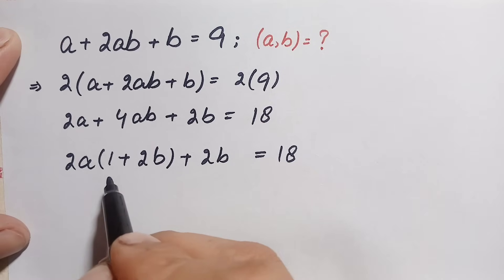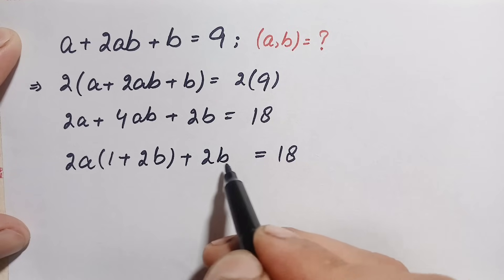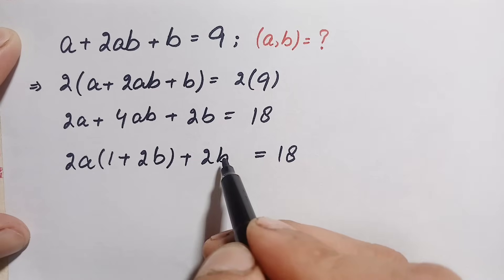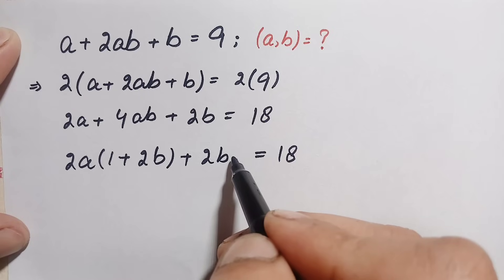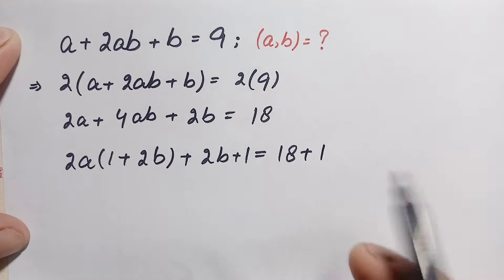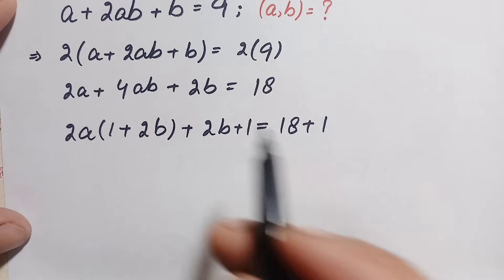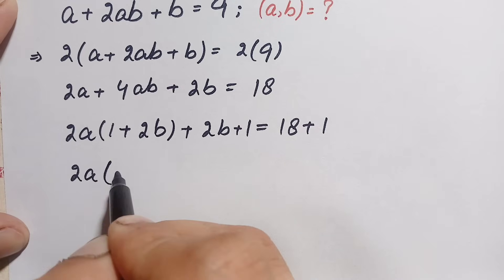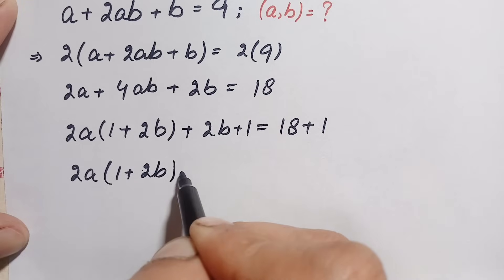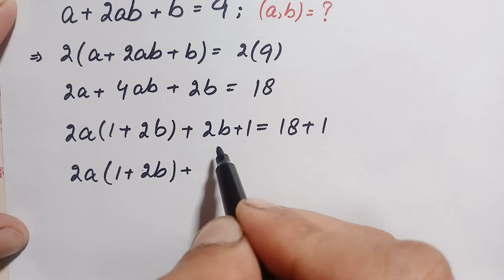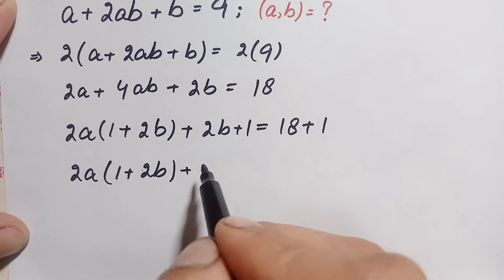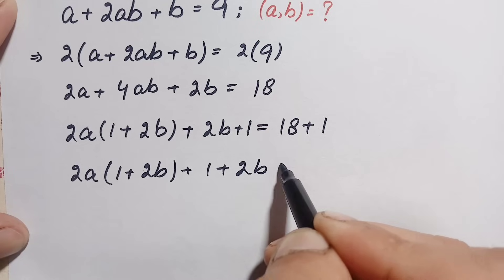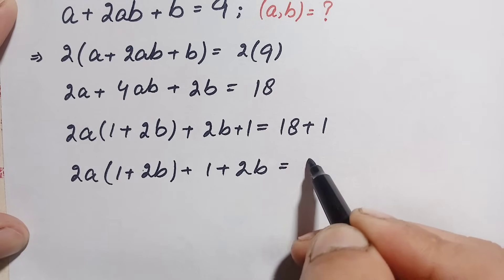Now look at the first term — here is (1 + 2b). So we will try to make (1 + 2b) appear in the remaining term as well. To make the 2b term match, we will add 1 to both sides of this equation. So the left hand side becomes 2a(1 + 2b) plus (1 + 2b), equal to 18 plus 1, which is 19.